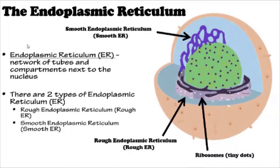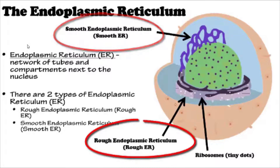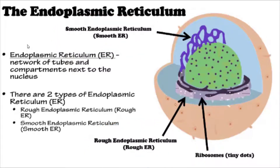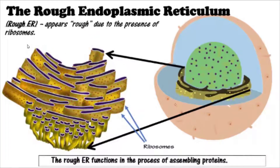There are two types of endoplasmic reticulum: the smooth ER and the rough ER. The rough ER appears rough due to the presence of ribosomes. The rough ER functions in the process of assembling proteins.